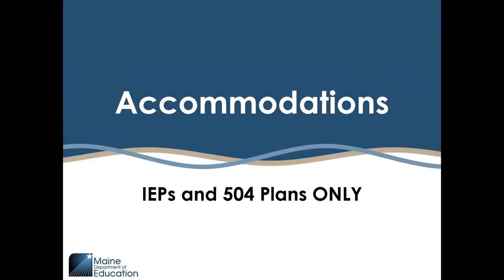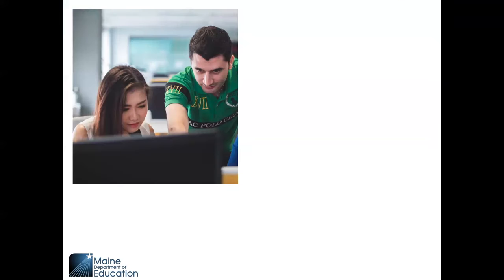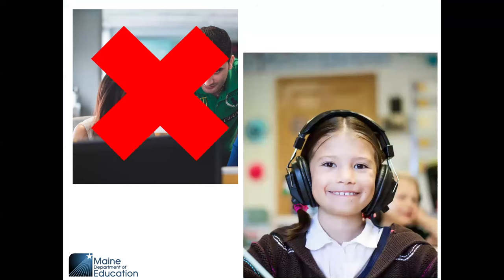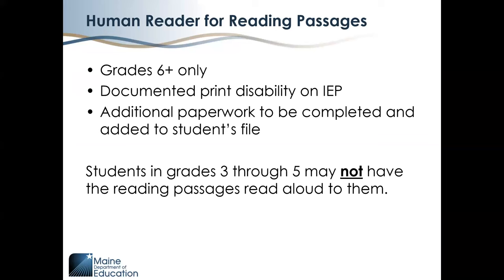Accommodations are available only to students with IEPs and 504 plans. Please note that human reader is only an appropriate accommodation for a student taking a paper-based test. Students taking assessments online who need the support should be utilizing the text-to-speech tool. Human reader for reading passages is an accommodation only allowed for students with a documented print disability in grade 6 and above. The IEP team needs to complete additional paperwork to be included in the student's file before the provision of this accommodation. No students in grades 3 through 5 should have the reading passages read aloud to them by a human reader.